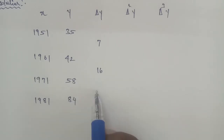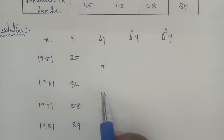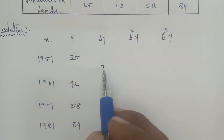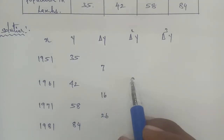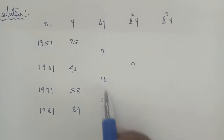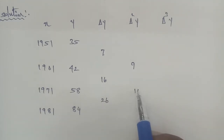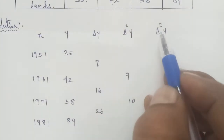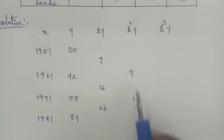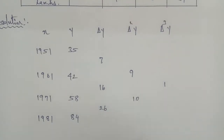Next, we compute the second differences (Δ²y): 16 - 7 = 9, 26 - 16 = 10. Then the third difference (Δ³y): 10 - 9 = 1. So we have our complete difference table.